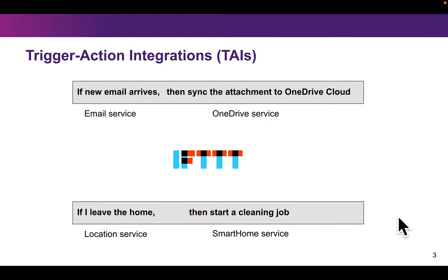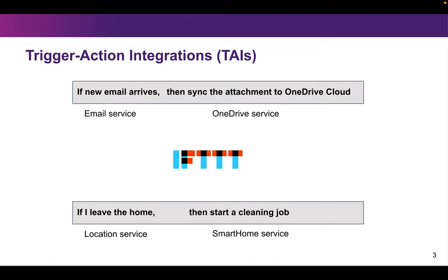Here are two simple examples. For the first one, if a new email arrives, then save the attachment of this email to OneDrive. The trigger service is the email service, while the action service is the OneDrive service. For the second one, if I leave home, then start a cleaning job — it connects a location service and a smart home service, forming simple automations for the user.